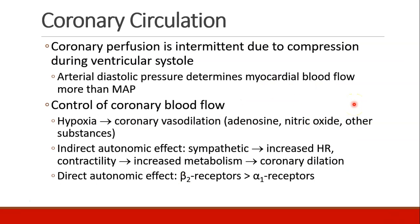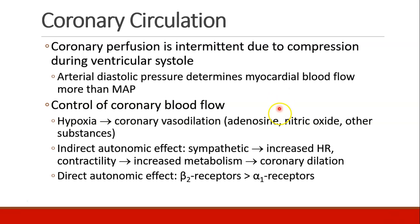Because the coronary arteries are embedded in the heart wall, every time the heart squeezes, it impedes the flow of the coronary circulation. Coronary perfusion is intermittent — it's minimized during systole and occurs mostly during diastole. Arterial diastolic pressure really determines myocardial blood flow even more than mean pressure, because the coronary sinuses are opened during diastole.